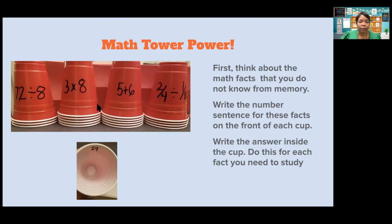Once you've written them on the cups, on the inside of the cup, you're going to write your answer. So we have 3 times 8 here, on the inside of the cup wrote the number 24, because that is the answer. And after you do that for each of the facts or number sentences, you are going to be ready to move on to the next step and play the game: Math Tower Power.